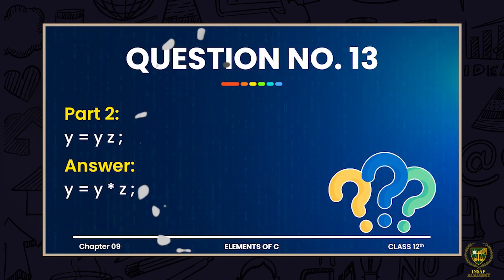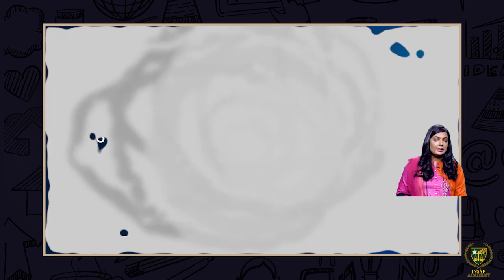The second expression is y = yz. The violation here is similar to the first one. In mathematics when we write 'yz' it is understood that multiplication is happening between them, but the compiler cannot automatically detect this relationship. So you have to put the operator there. The correct expression will be: y = y * z — now it is a valid expression.